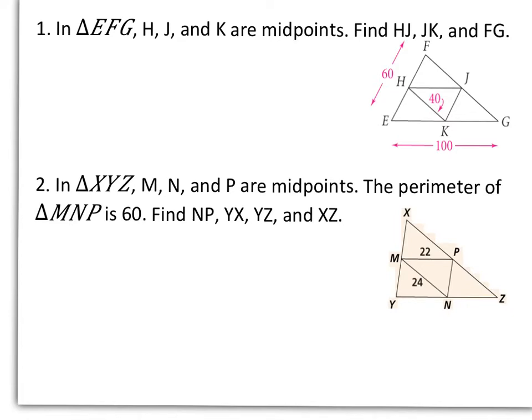Well, starting with HJ. So HJ is the midsegment right here that is parallel to the line segment EG. So if it's parallel to EG, that means that HJ is half the length of EG, or half of 100, which is 50. So HJ is 50.